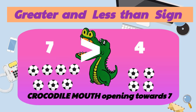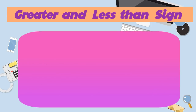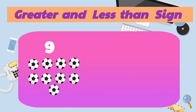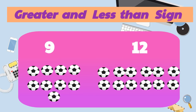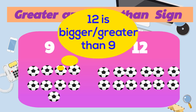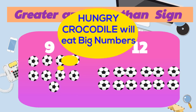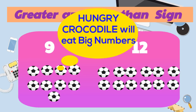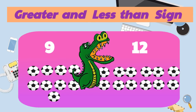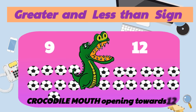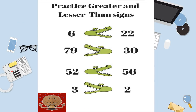In this next example we have two unequal numbers: 9 and 12. 12 is the bigger number, so the hungry crocodile mouth will eat 12 and open towards 12. Here are a few more examples using this same idea.